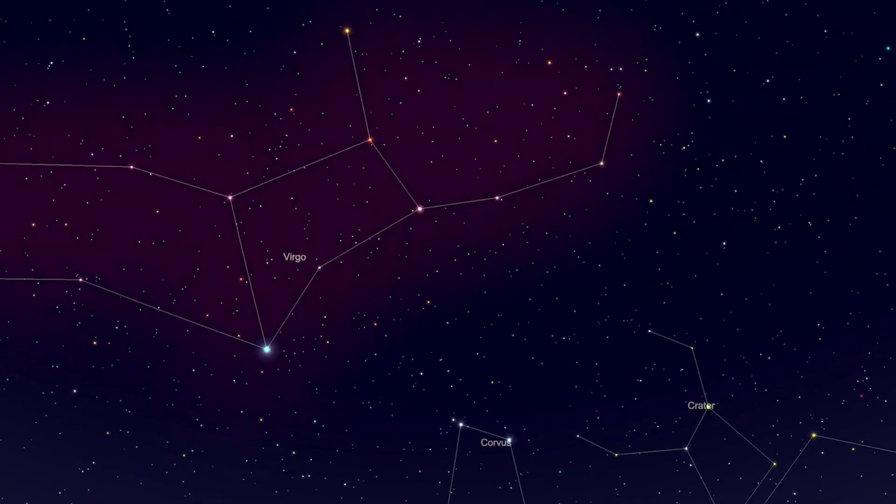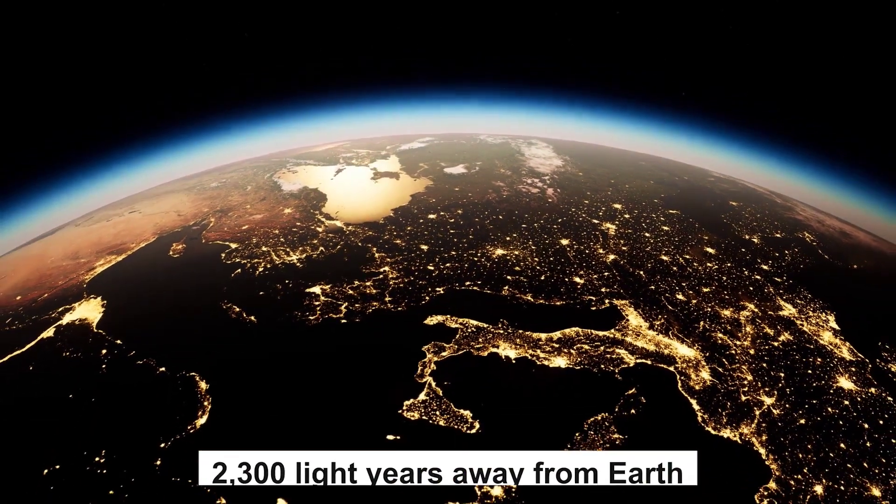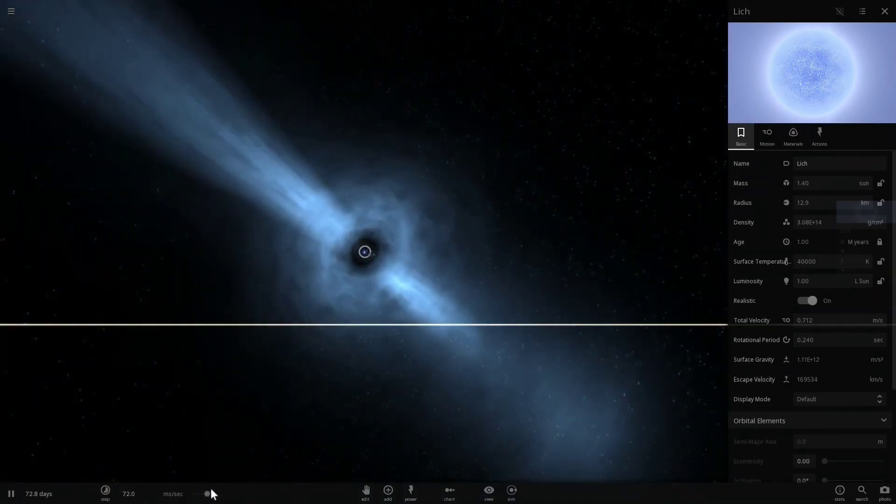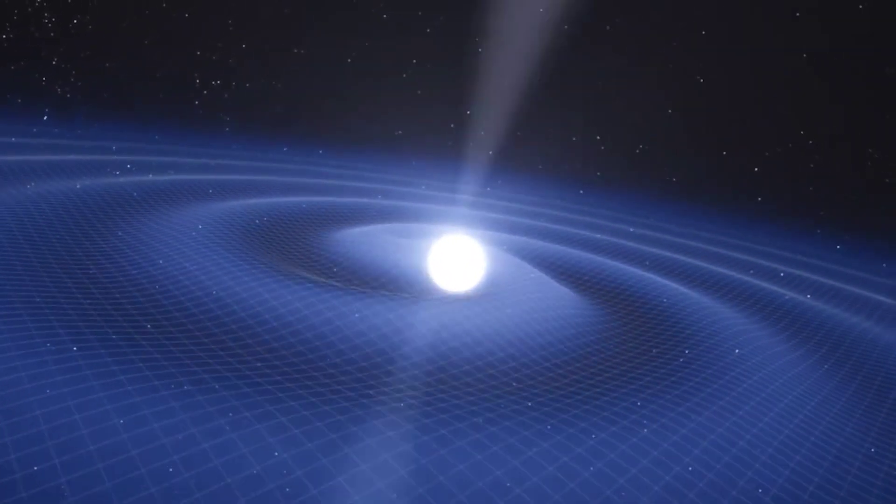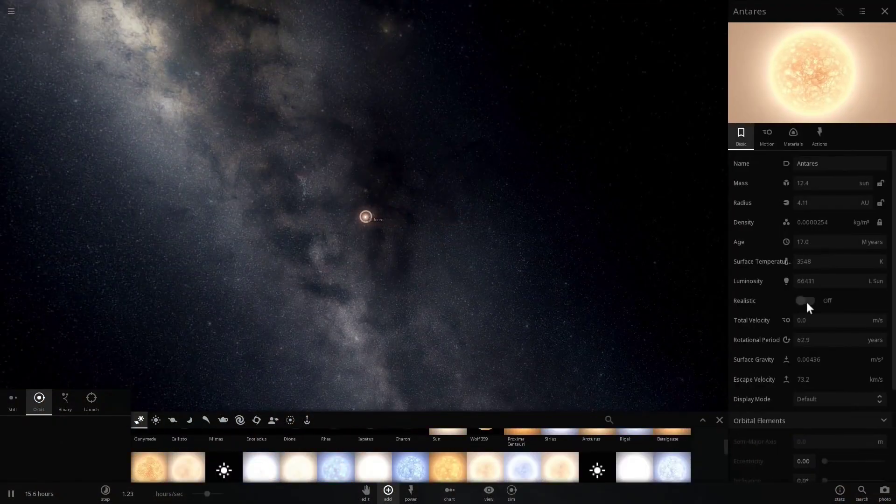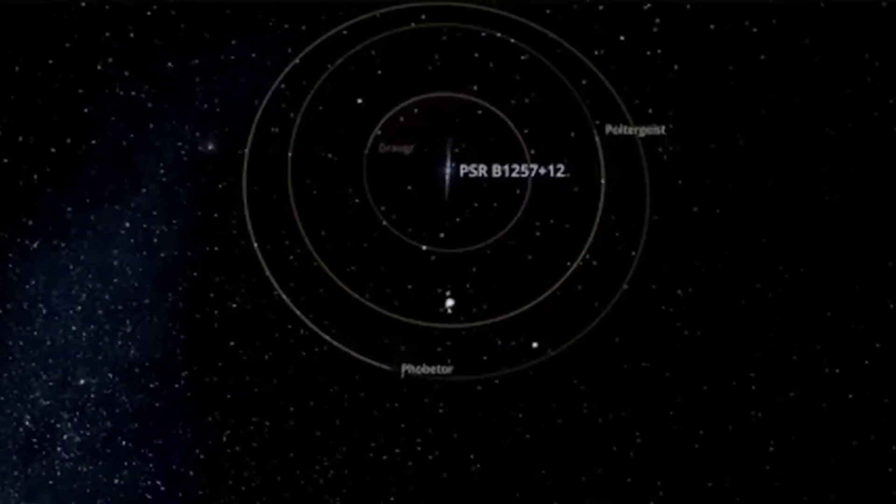Located in the constellation Virgo, approximately 2,300 light-years away from Earth, PSR-B-1257-12b orbits a pulsar, a type of neutron star that emits regular pulses of radiation. One thing that makes the PSR-B-1257-12b an unusual exoplanet is that it orbits a star that is not a main-sequence star like our Sun.